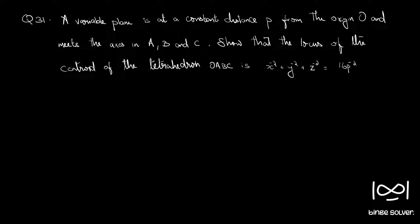Question 31. A variable plane is at a constant distance p from the origin and meets the axis in a, b and c. Show that the locus of the centroid of the tetrahedron Oabc is x raise to minus 2 plus y raise to minus 2 plus z raise to minus 2 is equal to 16 p raise to minus 2.